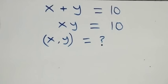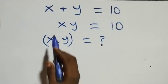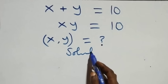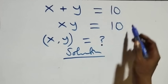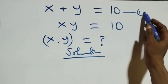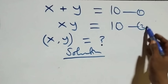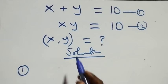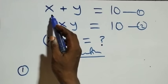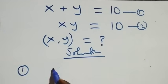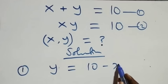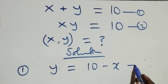Welcome. Here we solve a nice algebraic equation. From what is given, label this as equation one and this as equation two. From equation one, we can make y the subject by taking x to the other side, so we have y equals 10 minus x. Label this as equation three.